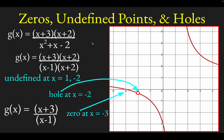Hopefully that helps. In summary: to look for zeros, look for where factors in the numerator go to zero — unless they're also repeated in the denominator, in which case you'll have a hole at that x-coordinate. And to find undefined points, look at where factors in the denominator go to zero. I hope that helps, and thanks for checking this out.